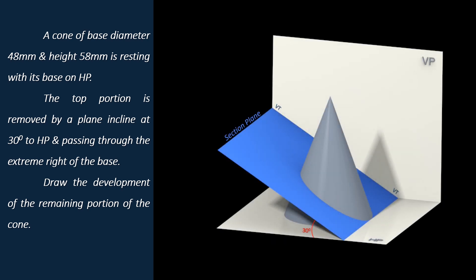We can see the base of the cone is resting on HP, and the section plane is inclined at 30 degrees to HP, passing through the extreme right of the cone. As the section plane is perpendicular to VP and inclined to HP, we will get the trace of the section plane as a line on the vertical plane VP, which is the vertical trace of the section plane.